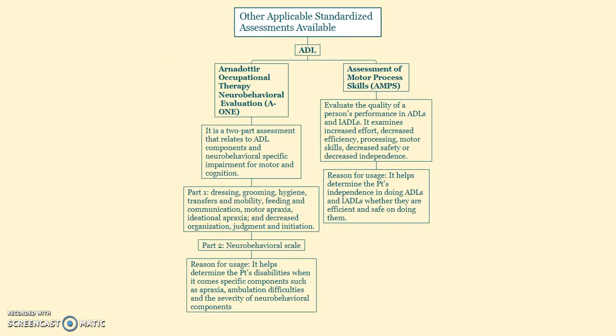Other assessments for ADLs include the A-1 and the AMPS. The A-1 helps determine the patient's disabilities regarding specific components such as apraxia, functional ambulation, and severity of neurobehavioral components. The AMPS helps determine the patient's independence in performing ADLs and IADLs, and whether they are efficient and safe in doing them.